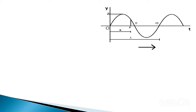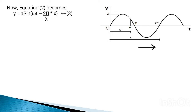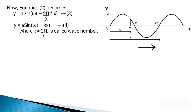On substituting the value of phi, we get y equals to a sin(omega t minus 2 pi over lambda times x). This can also be written as y equals to a sin(omega t minus kx), where k equals to 2 pi over lambda is a constant known as the wave number. This is the equation of a progressive wave in one form.